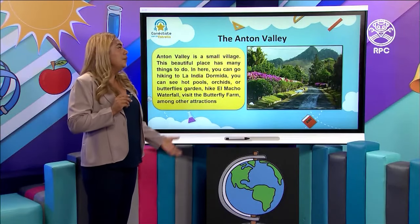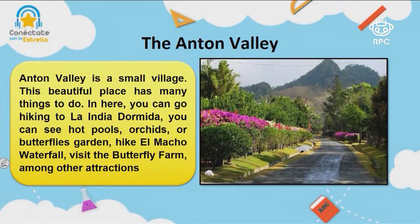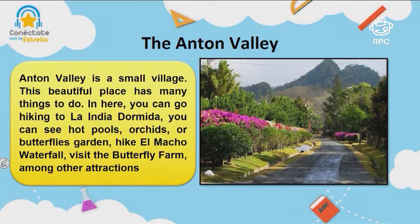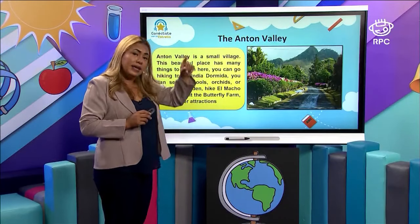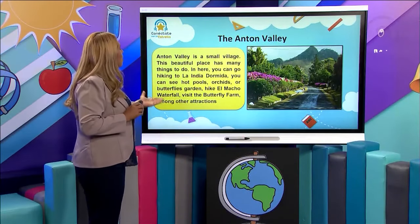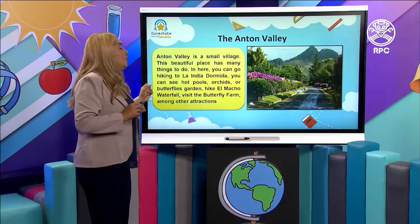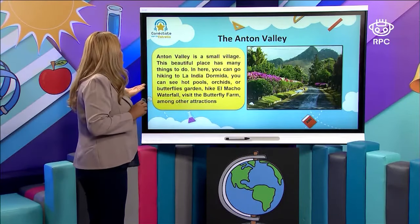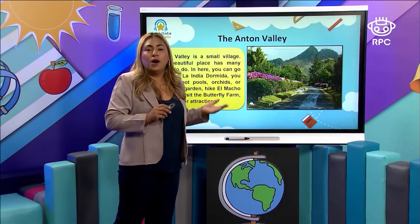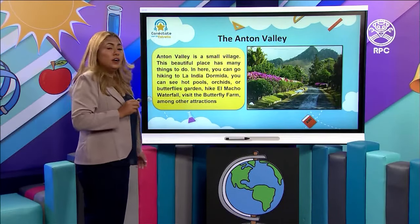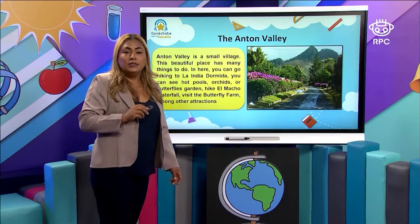What about the Anton Valley? Where is the Anton Valley? It is in the province of Cocle. Anton Valley is a small village. There are many things that you can do there. You can go hiking to La India Dormida. You can learn about orchids and the hot pools. You can see the butterfly gardens, or you can hike to El Macho Waterfall. There are a lot of activities and attractions in Anton Valley.